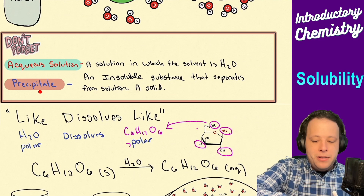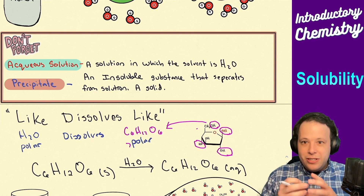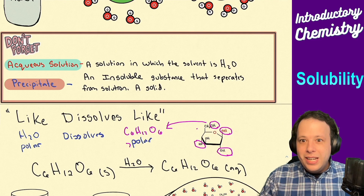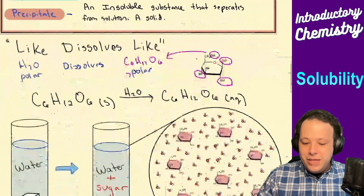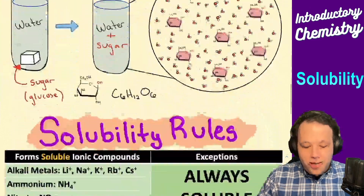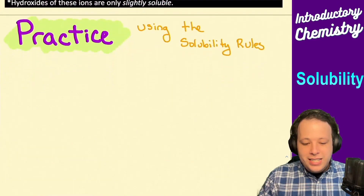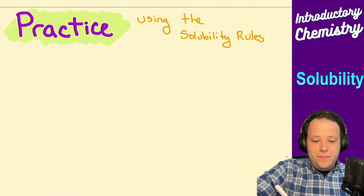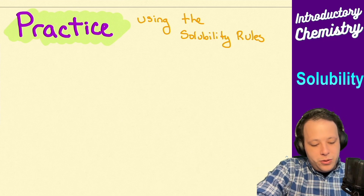A precipitate is an insoluble substance that separates from the solution, meaning it stays as a solid. We're going to practice using solubility rules. Let's try the very first example.